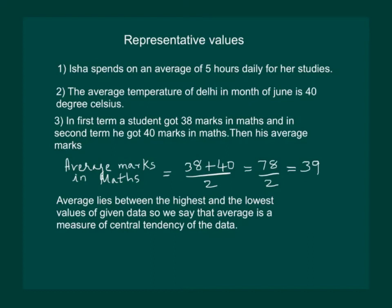We conclude that average lies between the highest and lowest values of the given data, so we can say that average is a measure of central tendency of the data.